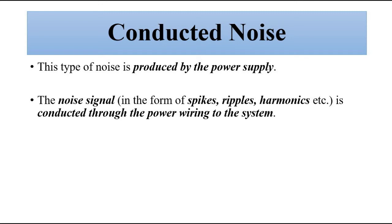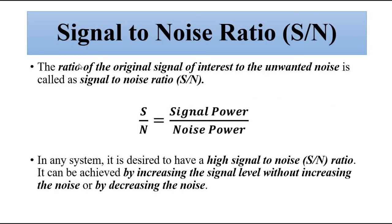There are different parameters by which we can study the effect of noise on the measurement process. One such parameter is signal-to-noise ratio. It is expressed as the ratio of the original desired signal to the unwanted noise — the ratio between signal power and noise power. In any system, whether measurement systems, communication systems, or signal processing circuitry, it is desired to have a high signal power with respect to noise power, that is, a high signal-to-noise ratio. This can be achieved either by increasing the signal level or by decreasing the noise level.